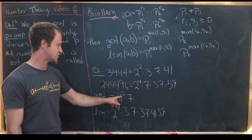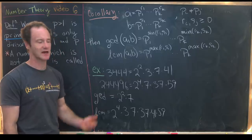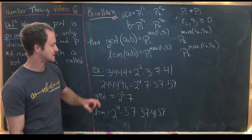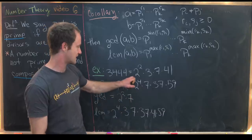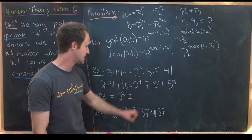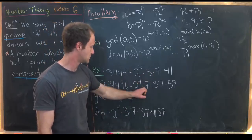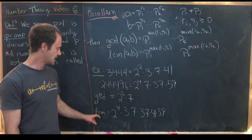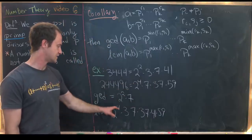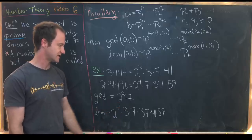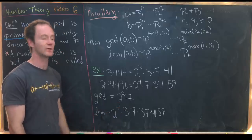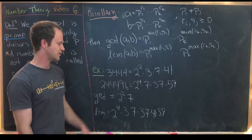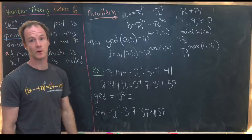Using the corollary, the gcd of 3444 and 244496 is 2² · 7 = 28, since those are the only shared prime factors. The lcm is 2⁴ · 3 · 7 · 37 · 41 · 59, for the same reason — taking the maximum power of each prime. I'll let you calculate that number if you'd like.